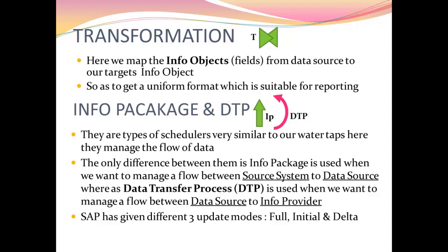SAP has given three different update modes: full, initial, and delta. In full update mode, all records from the source system are updated up to the last record. In initial mode it is similar to full, but it adds a pointer at the end so that whenever the next data comes, a delta update is taken from that pointer to the most recent record. In delta mode, records are taken from that pointer to the last record.